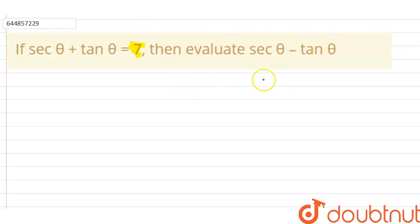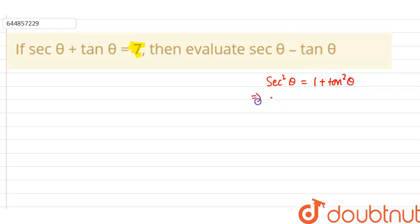First, we use the trigonometric identity: secant squared theta is equal to 1 plus tan squared theta. This further implies that secant squared theta minus tan squared theta is equal to 1.